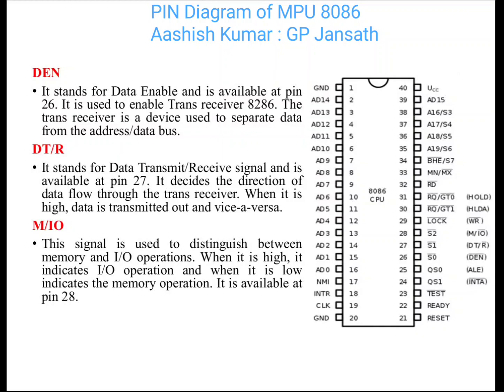M/IO (Memory or Input Output): This is the same signal seen in the 8085, used to indicate whether you have to read and write to memory or input/output. This is for pin number 28. When it is high, it selects memory, and when it is low, it selects input/output.